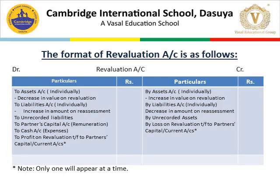On credit side: by assets account if the value of assets increases; by liabilities account if the amount of a liability decreases; by unrecorded assets; and by loss on revaluation transferred to partners capital account or current account if the capitals of partners are fixed. There will be only one item — either profit on revaluation or loss on revaluation — which will be recorded in the revaluation account.